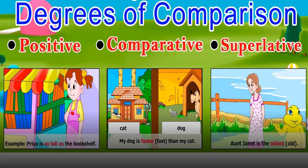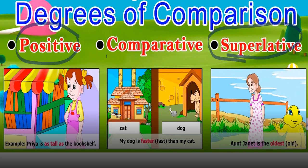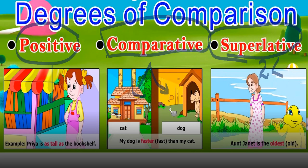So now, degrees of comparison. The proper name for this topic is degrees of comparison. There are three degrees: positive, comparative, and superlative. When we look at one thing it is positive. When we compare two things it is comparative. When we compare more than two things, we call it superlative degree of comparison.